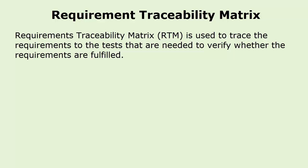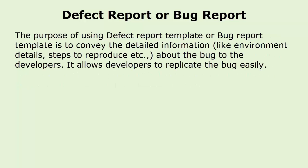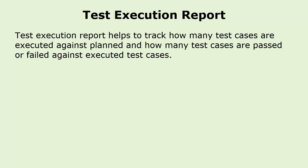Requirements traceability matrix is used to trace the requirements to the tests that are needed to verify whether the requirements are fulfilled. Earlier we made a video on requirements traceability matrix and explained it in detail. The purpose of using a defect report or bug report template is to convey detailed information about the bug to the developers, allowing them to replicate the bug easily.